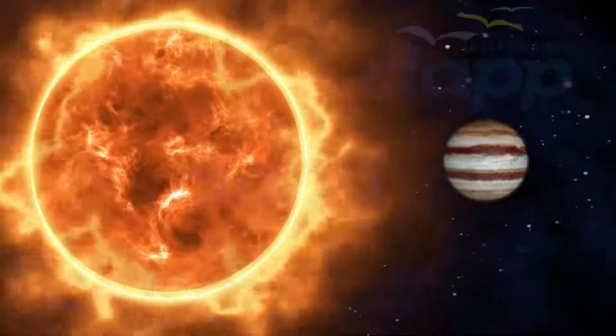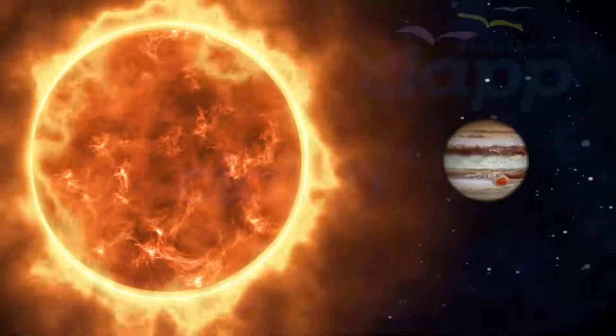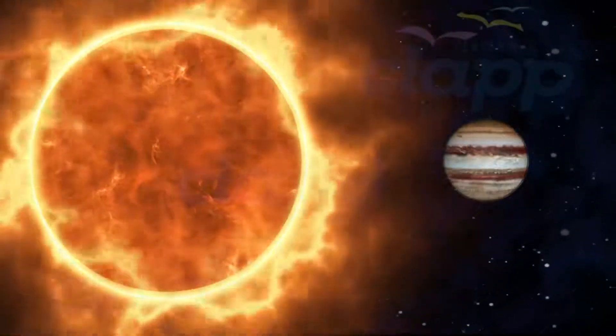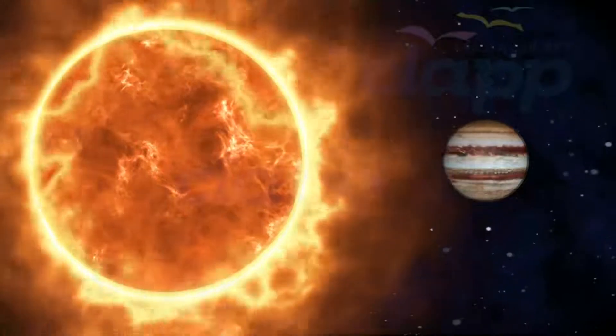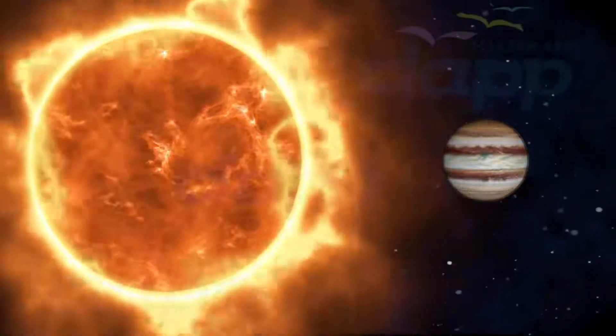Jupiter's radius is about 1/10 the radius of the Sun and its mass is 1/1000 the mass of the Sun.